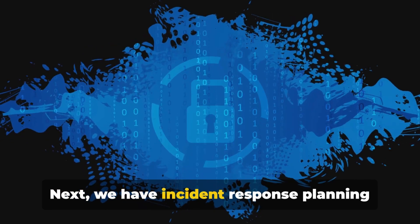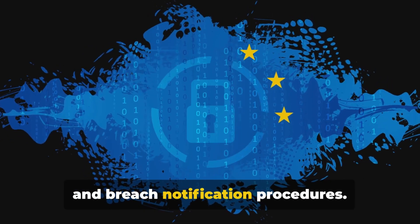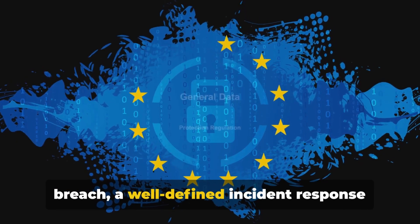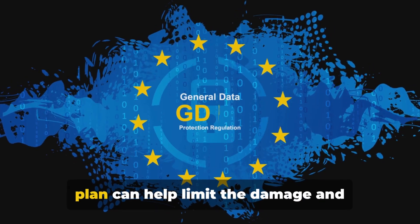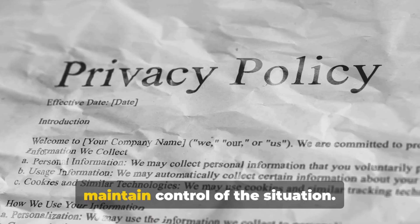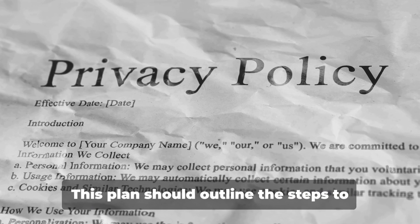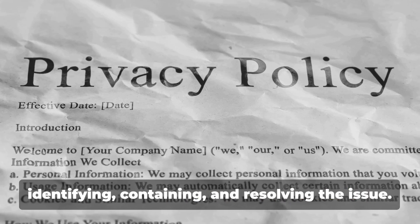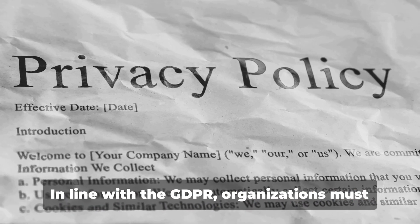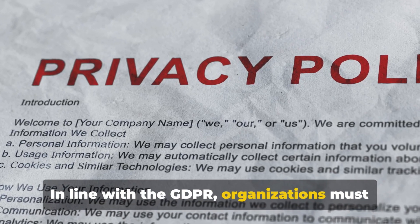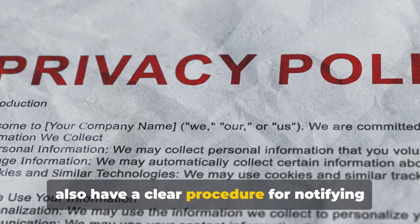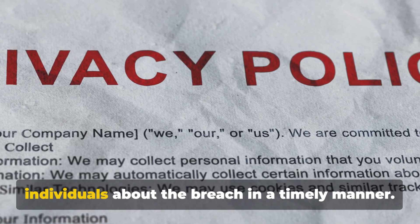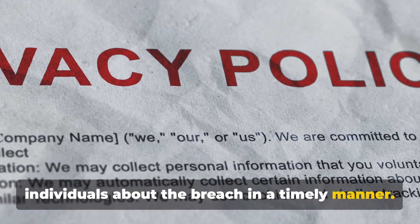Next, we have incident response planning and breach notification procedures. In the unfortunate event of a data breach, a well-defined incident response plan can help limit the damage and maintain control of the situation. This plan should outline the steps to take upon discovering a breach, including identifying, containing and resolving the issue. In line with GDPR, organisations must also have a clear procedure for notifying the relevant authorities and affected individuals about the breach in a timely manner.